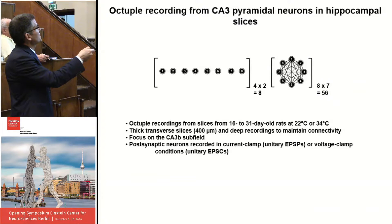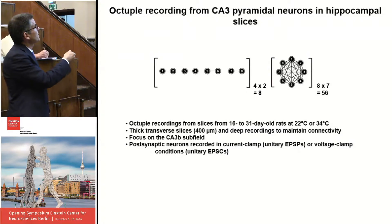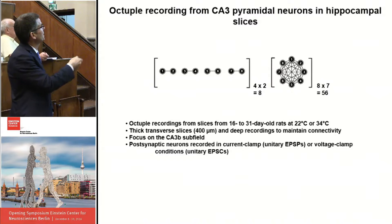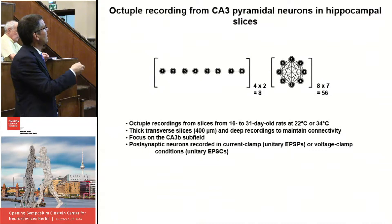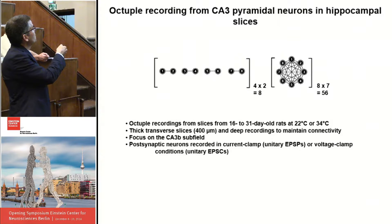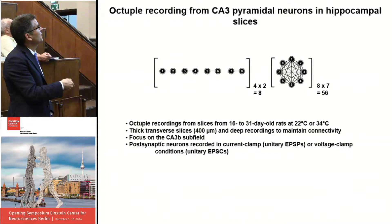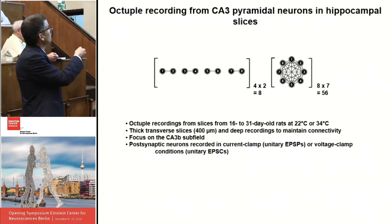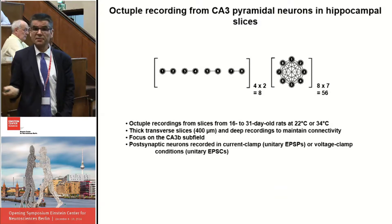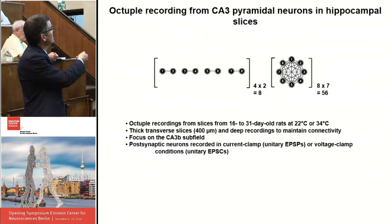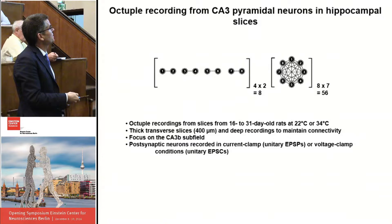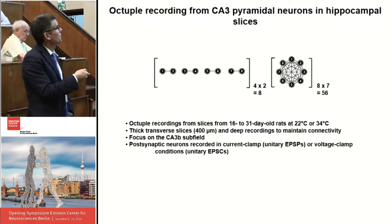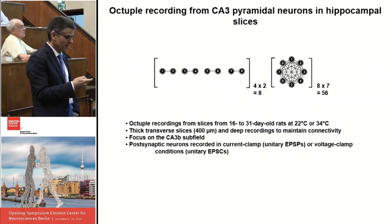We have used octuple recordings using slices from 16 to 30 day old rats at either room temperature or physiological temperature. We use relatively mature animals to avoid problems due to developmental changes in connectivity. We use relatively thick slices of 400 micrometers and perform very deep recordings to maintain connectivity as much as possible. We focus on the CA3b subfield, which is best maintained under our conditions. Post-synaptic neurons are recorded in either current clamp or voltage clamp configuration to record EPSPs or EPSCs.